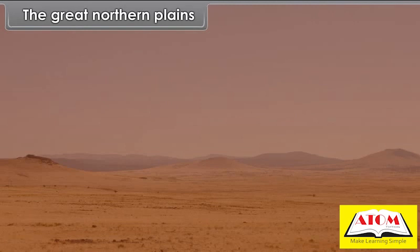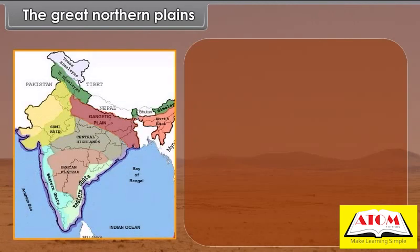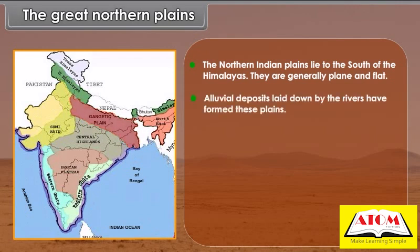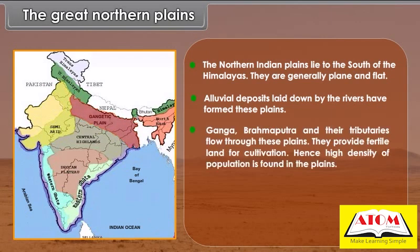The Northern Indian Plains lie to the south of the Himalayas. They are generally plain and flat. Alluvial deposits laid down by rivers have formed these plains. The Ganga, Brahmaputra and their tributaries flow through these plains. They provide fertile land for cultivation, and hence a high density of population is found in the plains.